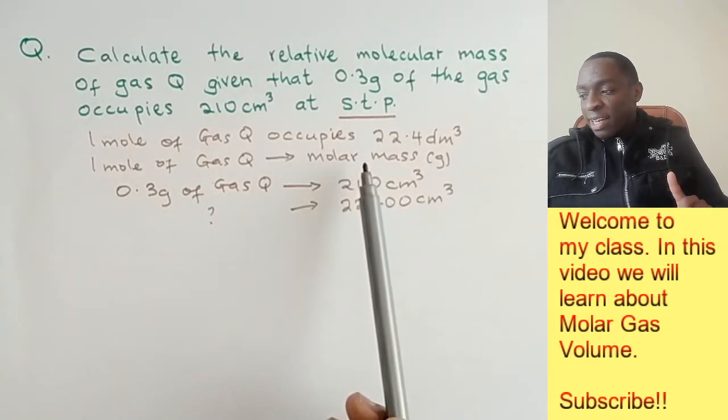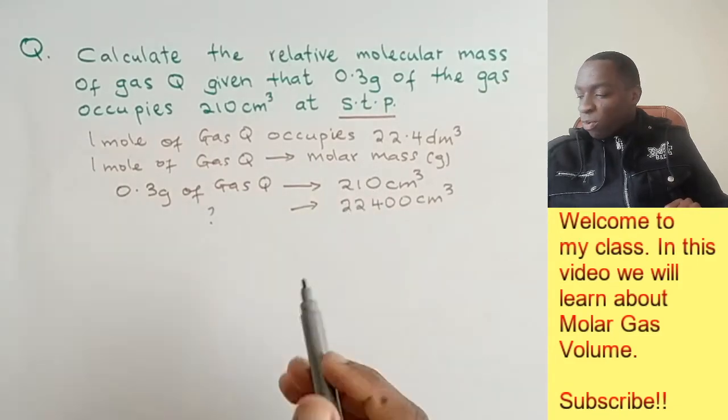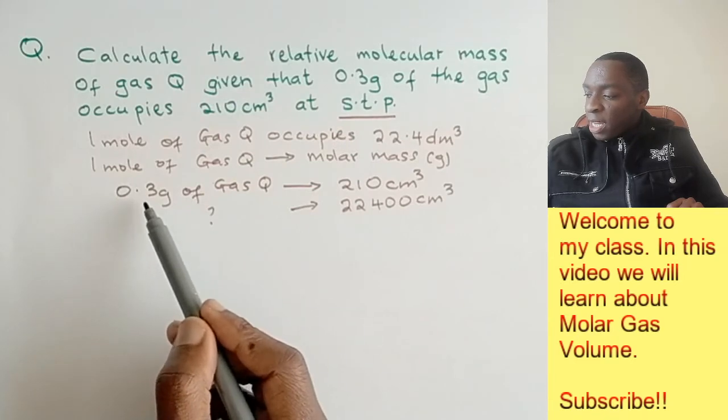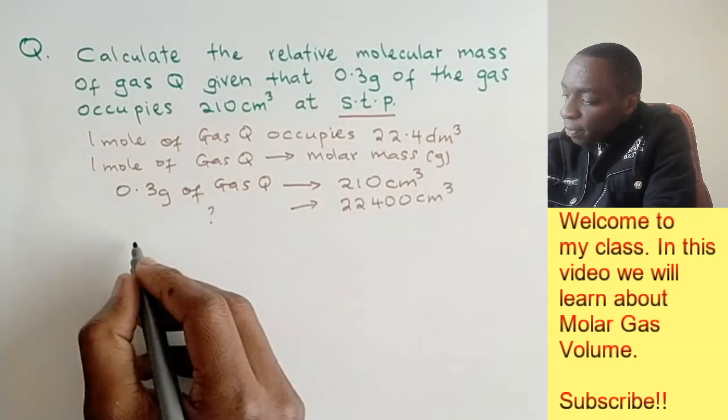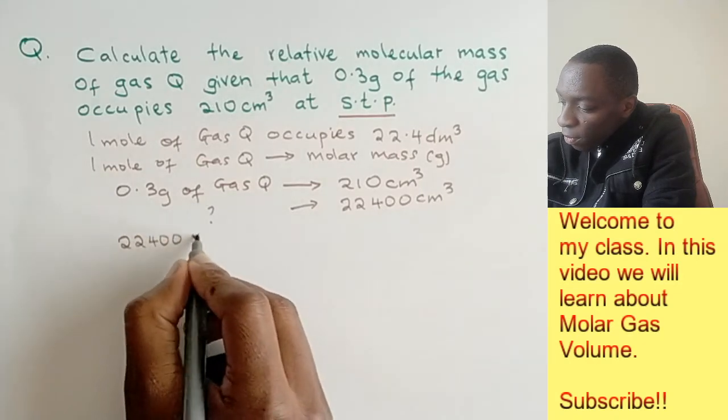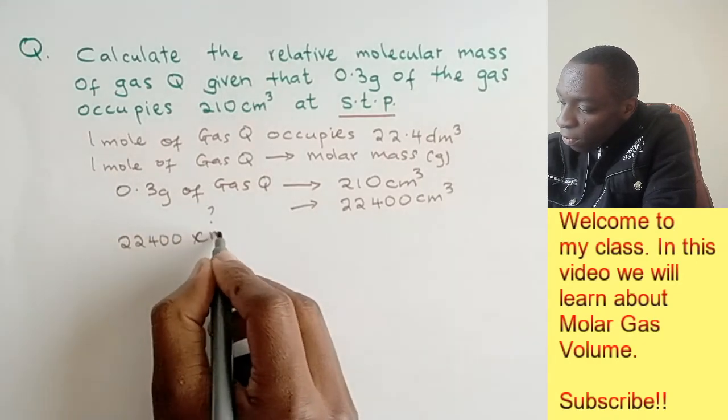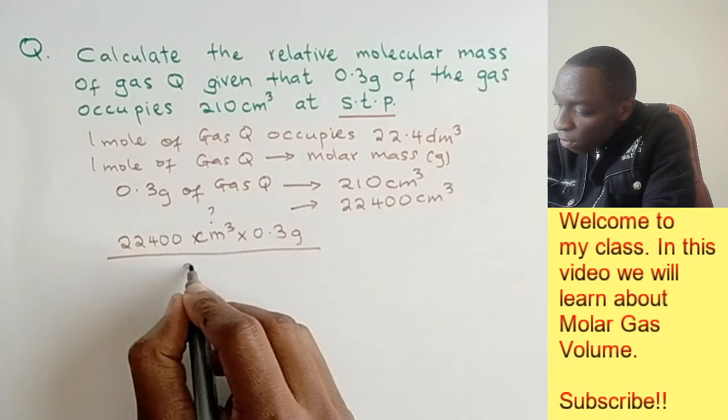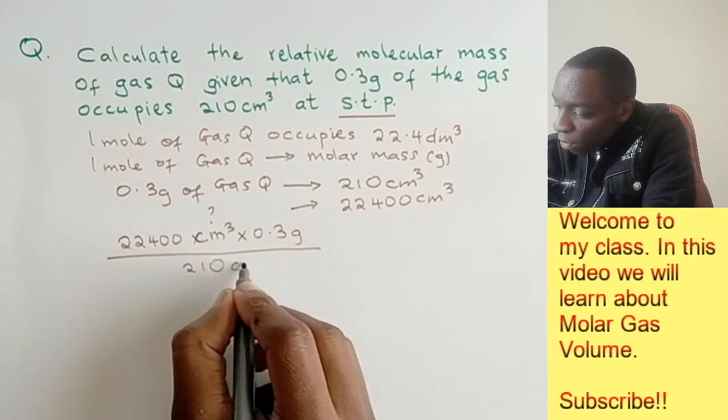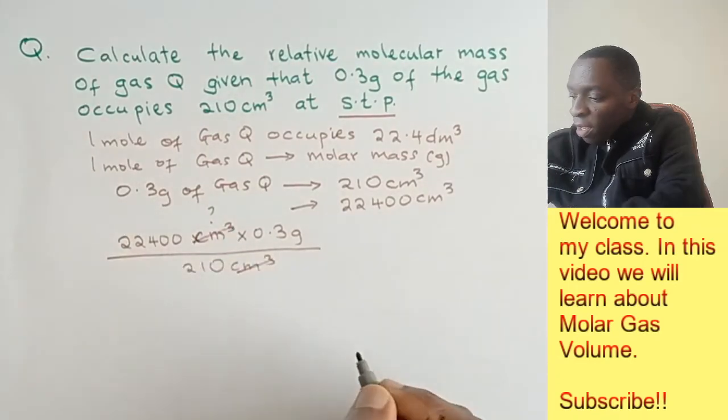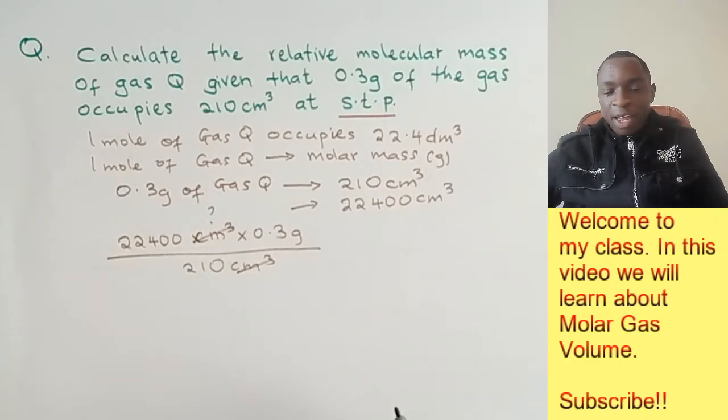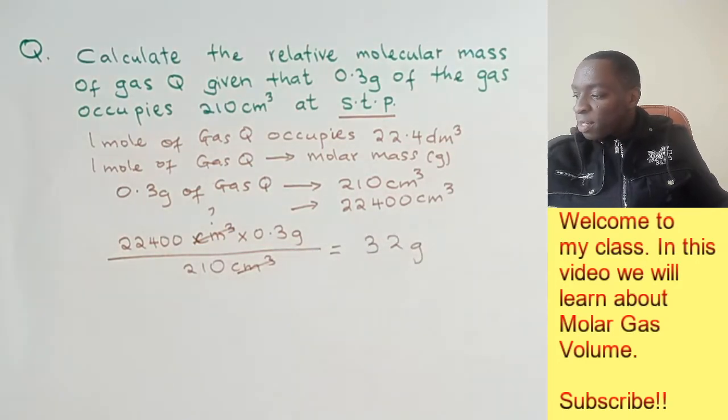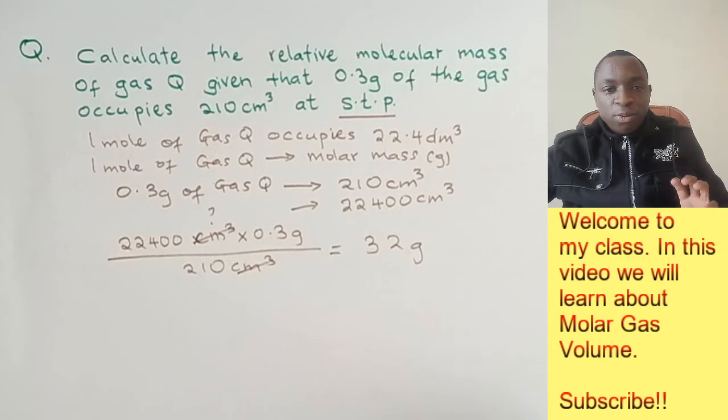We've gone from the molar gas volume to the 1 mole and then to the molar mass, so they're all related. If you find this value, then we have found the molar mass. We cross multiply by multiplying 22,400 by 0.3, divide by 210. The cm³ cross out and we calculate this, and you end up with 32 grams.